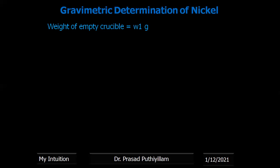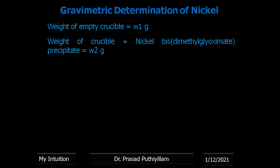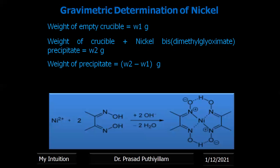Weight of empty crucible is W1 gram. Weight of crucible plus nickel bis dimethylglyoximate precipitate is W2 gram. Weight of precipitate is W2 minus W1 gram.